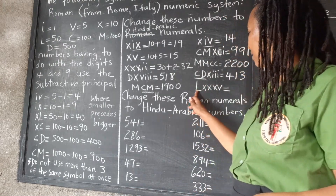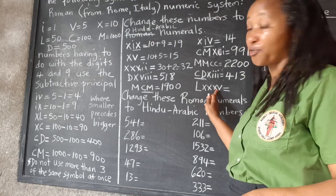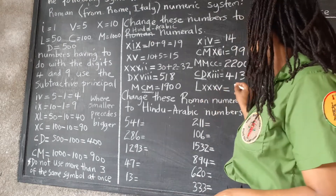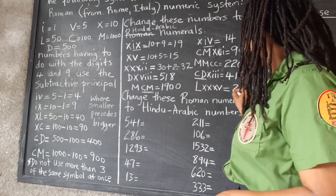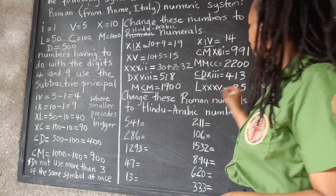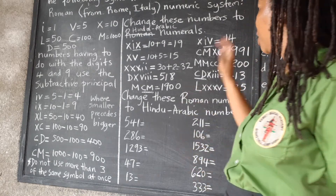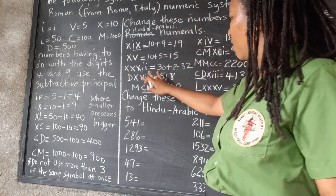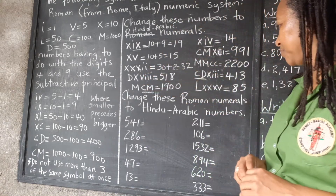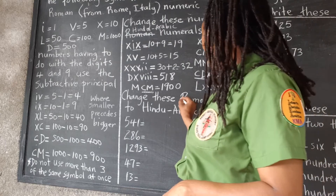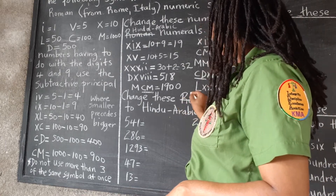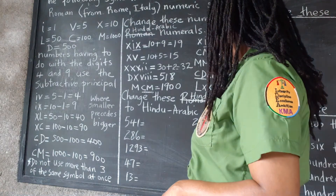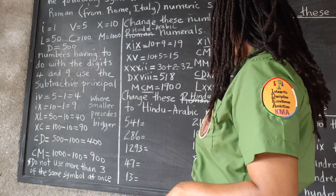50 plus 3 tens is 80, plus 5 is 85. That was changing the Roman numerals to Hindu-Arabic.